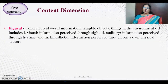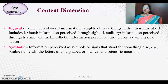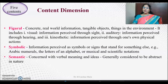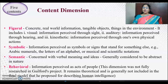These six operations will focus on five content types. Figural content is concrete, real-world information — tangible objects and things in the environment — and includes visual, auditory, and kinesthetic information: visual perceived through sight, auditory perceived through hearing, and kinesthetic perceived through one's own physical actions. Symbolic information is perceived as symbols or signs that stand for something else, such as numerals, alphabets, music, and scientific notations. Semantic content is concerned with verbal meaning and ideas, generally abstract in nature. Behavioral information is perceived as the acts of people, though this dimension was not fully researched by Guilford and remains theoretical.